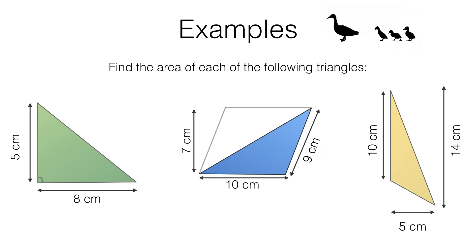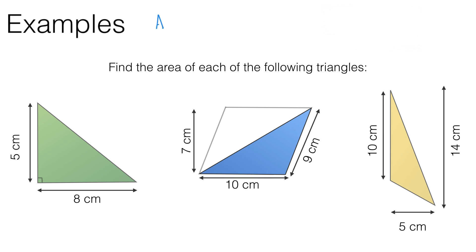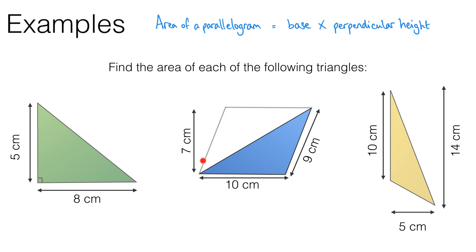Let's recap how to find the area of a parallelogram. The formula for the area of a parallelogram is simply the base — the length of one side that we're going to call the base — multiplied by the perpendicular height of the parallelogram from that base. Remember, perpendicular means at right angles. So let's look at the parallelogram we've got here. If we call this side the base, then the perpendicular height of the parallelogram is seven centimetres, because this length is at right angles to this length. We can't use the nine centimetre length in this case because it's not at right angles to the base we've chosen — this is in fact an obtuse angle.